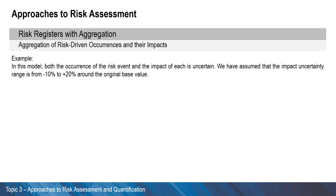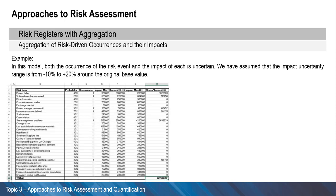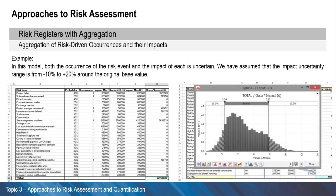Let's take a look at an example of such a model. In this model, both the occurrence of the risk event and the impact of each is uncertain. We have assumed that the impact uncertainty range is from negative 10% to positive 20% around the original base value. The figure on the left shows one sample of this model, and the figure on the right shows the distributions of outcomes after generating 10,000 such samples. This approach more accurately reflects the underlying nature of the situation, as it captures many scenarios, all of which can occur, and one can assess the range of possible outcomes, not just average values.